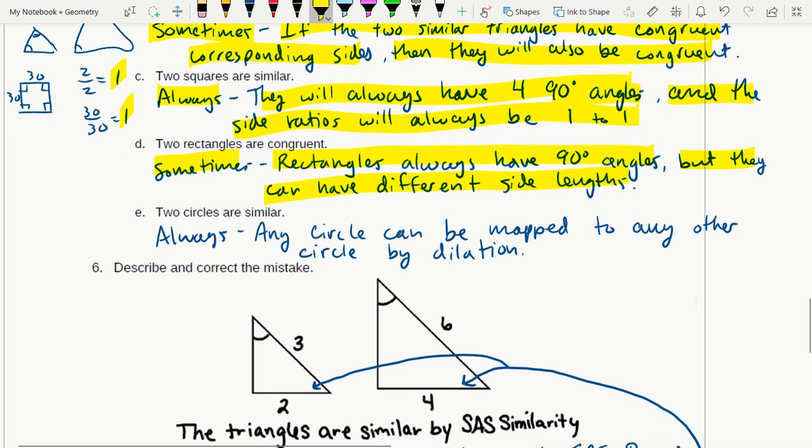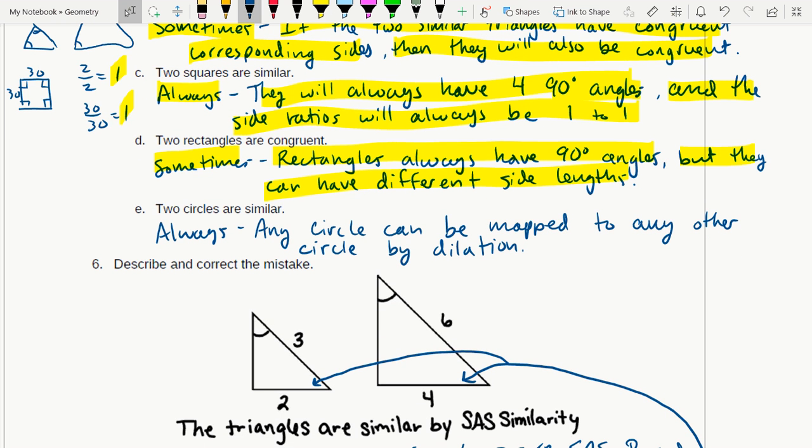And then two circles are similar - that's always. I mean, honestly guys, just imagine two circles, like this circle and that circle.